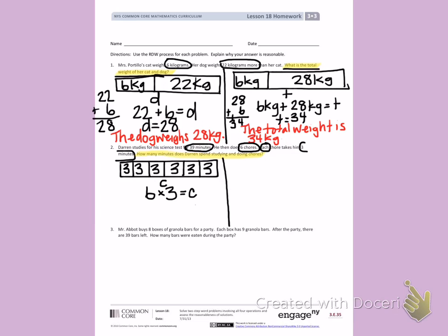There are 6 chores times 3 minutes each, which is going to equal C. 6 times 3. I can count by 6's 3 times. 6, 12, 18. C equals 18. Darren's chores take 18 minutes.